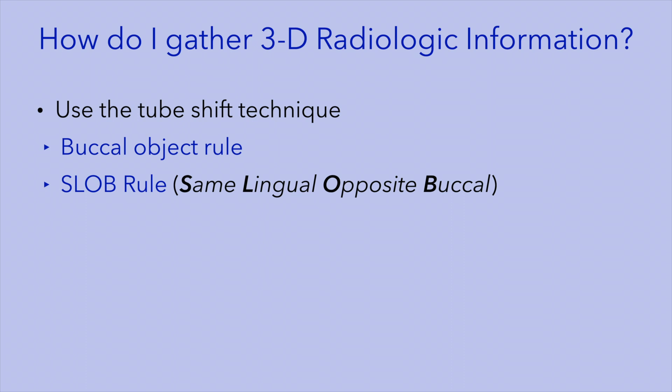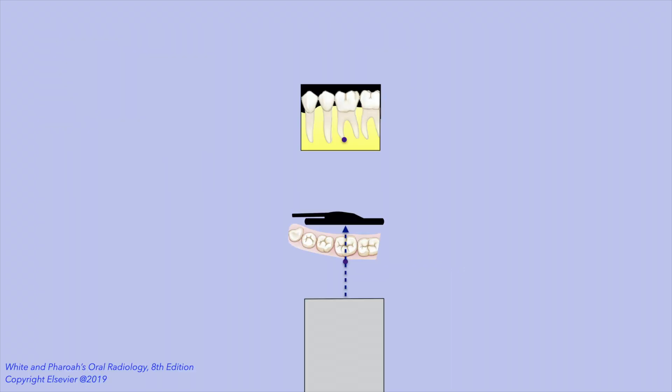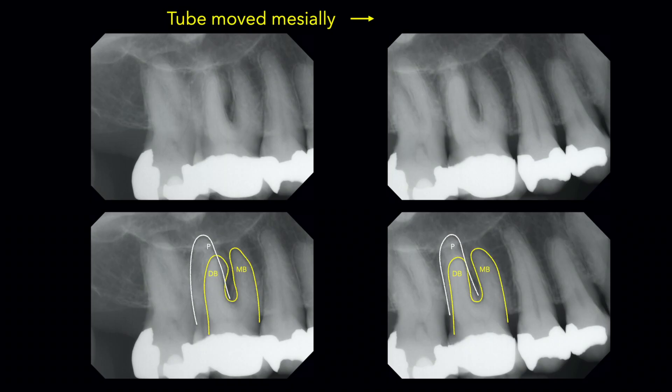Remember that in order to make these assessments of movement, you need to have a reference structure — in this case, our reference structure was the apex of the mandibular first molar. These two radiographs show the maxillary premolar and molar region, and since they are taken with different angulations, we can apply the tube shift or the buccal object rule to these images.